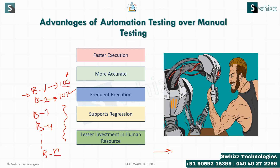Considering all these points, when to choose automation: when your application testing is a long-term project, you can go for automation testing. If you are doing a project of six to nine months or more, automation is appropriate.